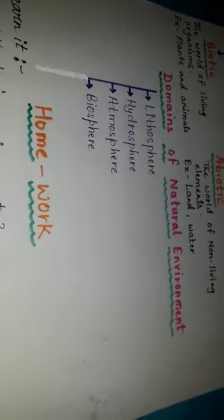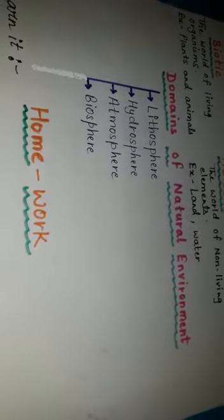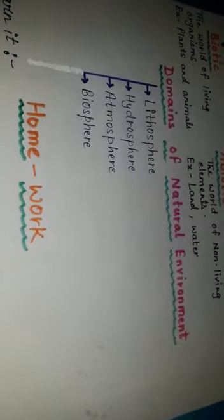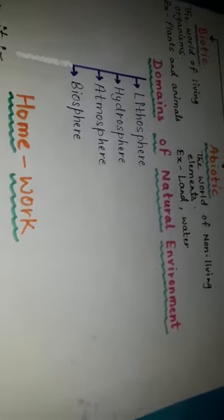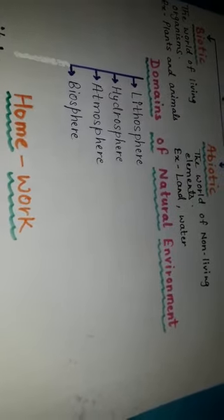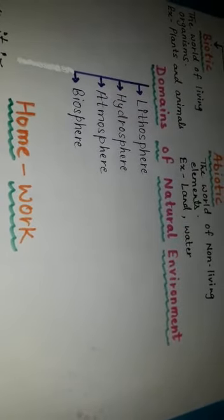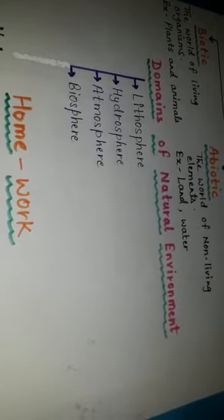Last point is biosphere. The combination of all the above is known as the biosphere. The Greek word 'bios' means life. The biosphere is a very small part of earth where land, water, and air interact with each other to sustain life.